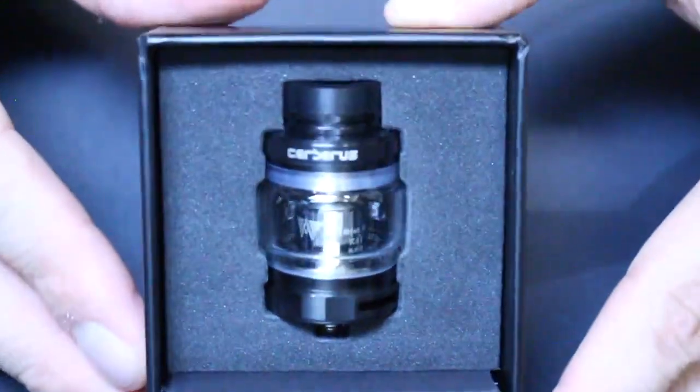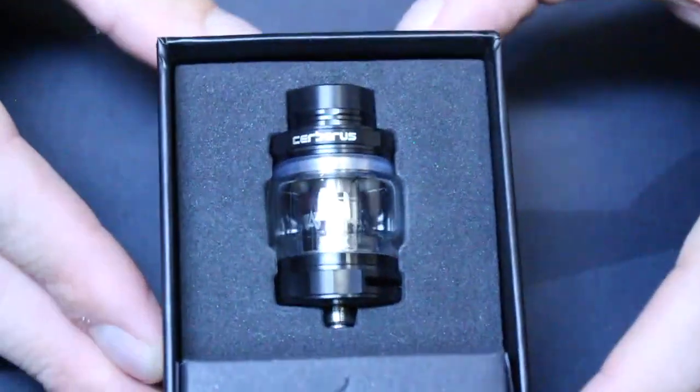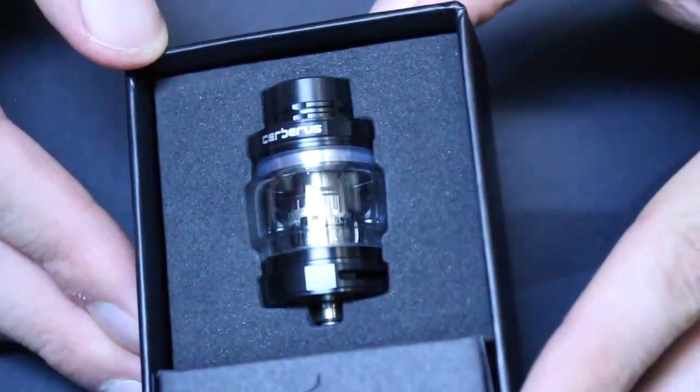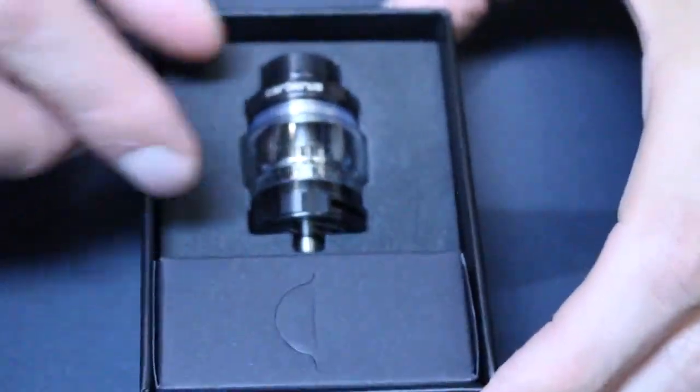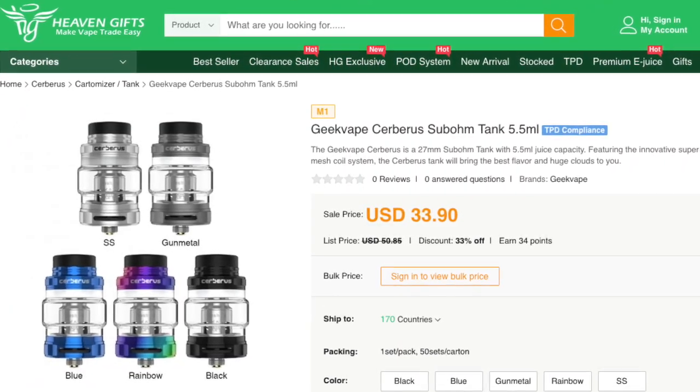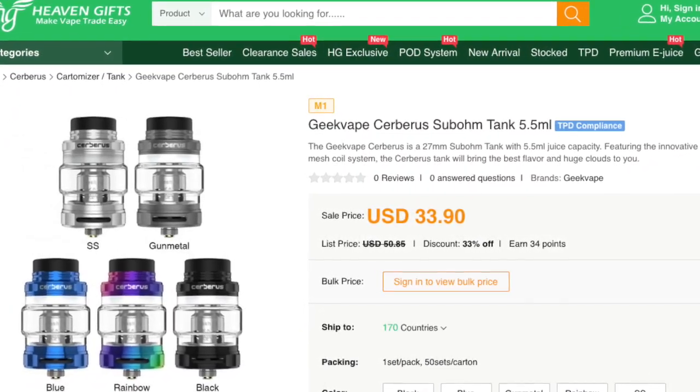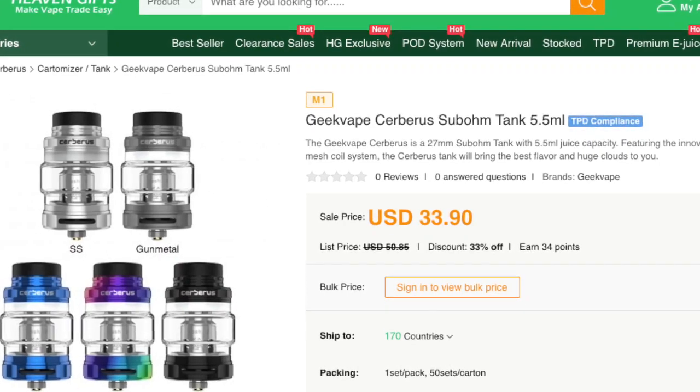It's 27mm in diameter, uses mesh coils, and has 5.5ml or 4ml e-juice capacity depending on the glass you use. It's a bottom airflow tank and comes in black, blue, gunmetal, rainbow, and stainless steel. You can get it for $33.90 at HeavenGifts.com.